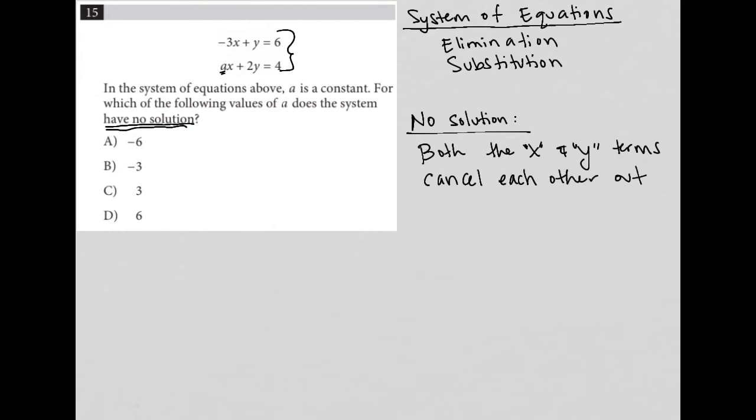So typically when we're using elimination, we want to cancel out only one term, right? Let's say we cancel out X somehow. We'd still have Y as part of our equation. We could then solve for Y and then backtrack and solve for X.